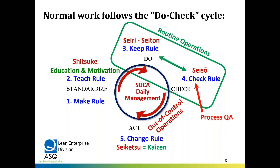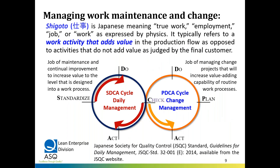Managing work maintenance and change is about what we call Shigato, which means true work or employment — work that adds value in production. In the standardized SDCA, the job of maintenance and continual improvement is to increase value to the level that's been designed into the work process. In plan-do-check-act, the job of managing change projects will increase the value-adding capability of the routine work operations. PDCA is basically planned improvement of SDCA, the Gemba One daily work. This is exactly the model in the Japanese standard JSQC guidelines for daily management, issued last in 2014.